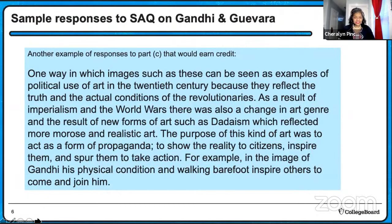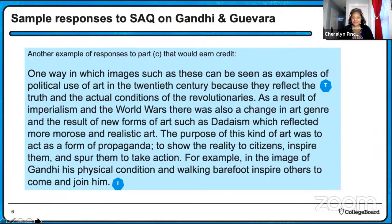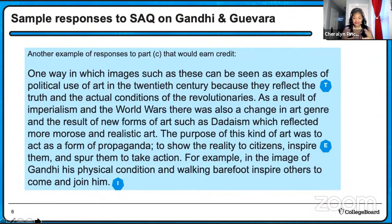Let's break this down using the strategy of TIE. Topic sentence — there it is: 'The use of art in the 20th century.' You want to include that in your narrative of your short answer question. One way in which the images such as these can be seen as an example of political use of art in the 20th century — we got our topic sentence. Next, the identify: for example, in the image, Gandhi's physical condition and walking barefoot inspires others to join him. Now we've identified what the image is about. Then the student explains it: the purpose of this kind of art was to act as a form of propaganda, to show the reality for citizens and to inspire them and spur them to take action.